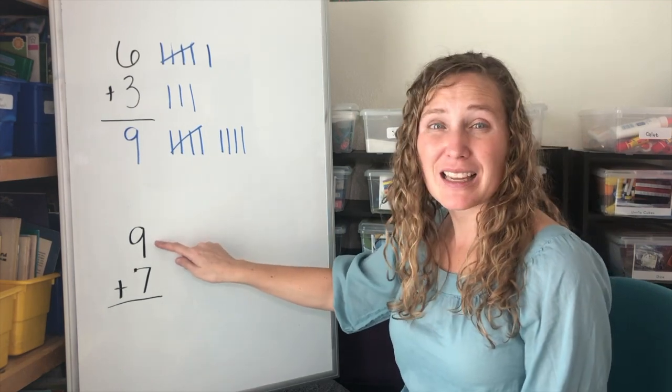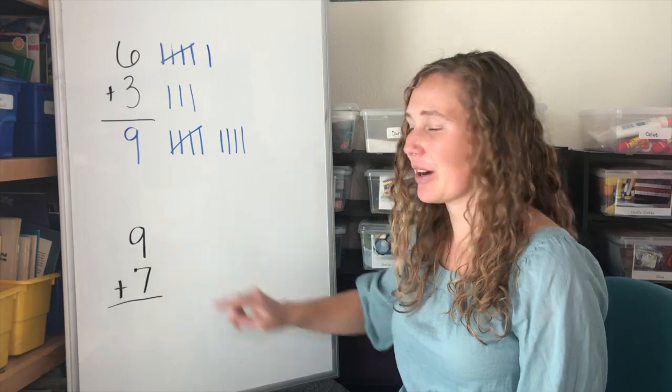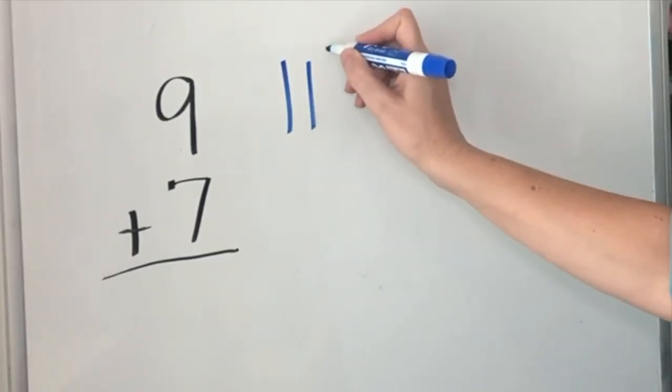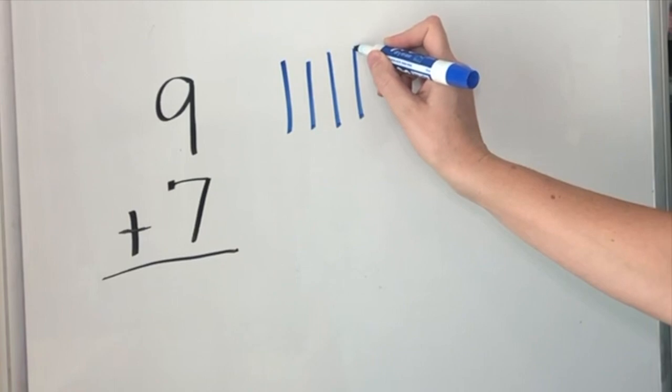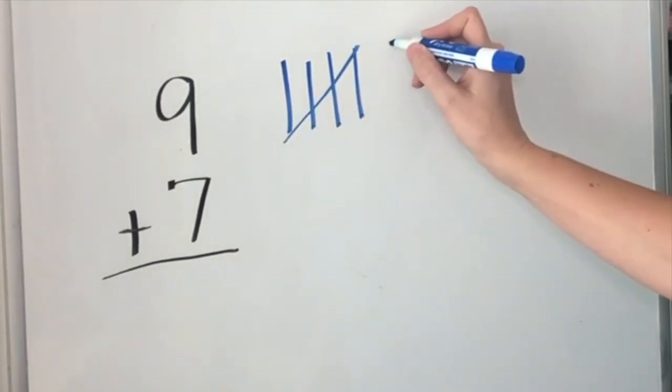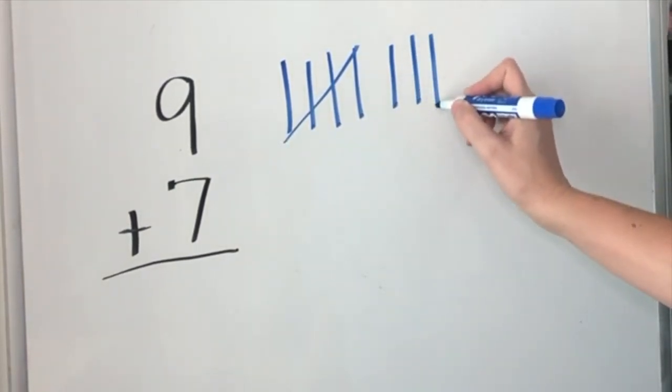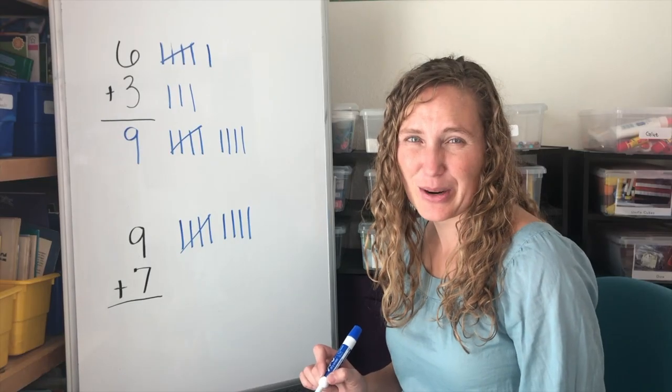Let's start by making nine tally marks. One, two, three, four, five. Five, six, seven, eight, nine. Nine tally marks.